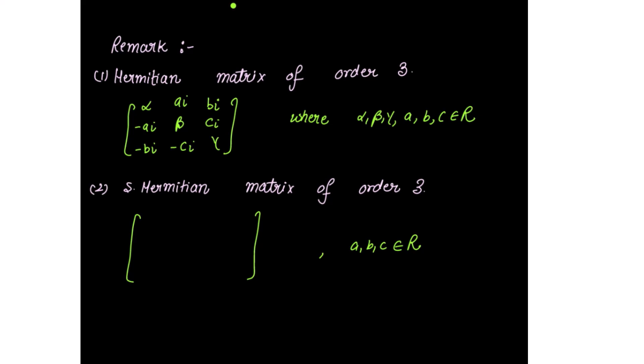For a skew-Hermitian matrix of order 3, we have 0, 0, 0 in the diagonal — please remember this — and then iota*a, iota*a, iota*b, iota*b, iota*c, iota*c. Such a matrix is a skew-Hermitian matrix of order 3, where a, b, c are real numbers.